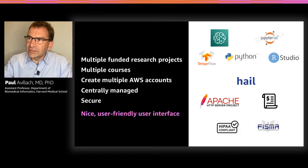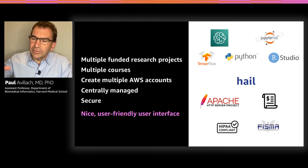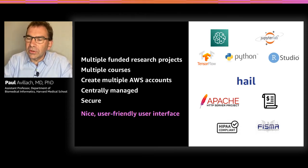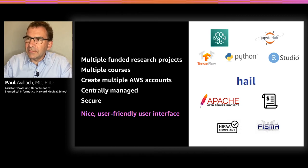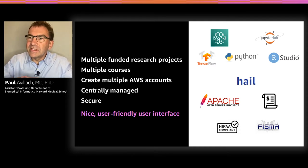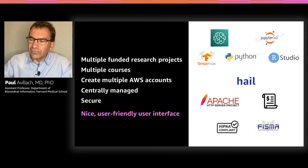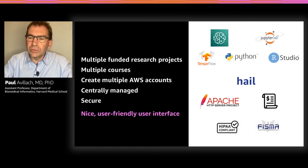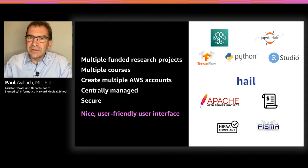The wish list also included access to all those scalable research environments using the power of SageMaker — with its own Jupyter Notebook environment with Python, RStudio, and the power of TensorFlow for deep learning — and the scalability of the Hail Variant Store enabling extremely large EMR clusters. All this needed to be on an open source Apache 2 license, not a proprietary one, with full detailed billing control, a very secure environment following HIPAA compliance, HITRUST, and later FISMA, to be able to put this platform through all those compliance audits — all with a very nice, user-friendly interface.